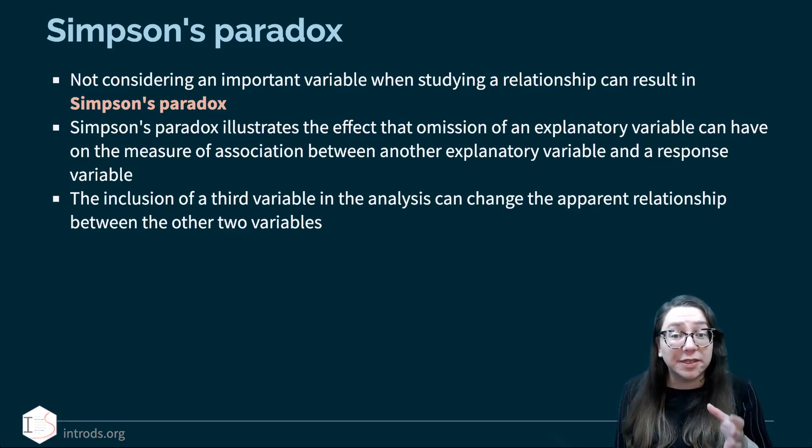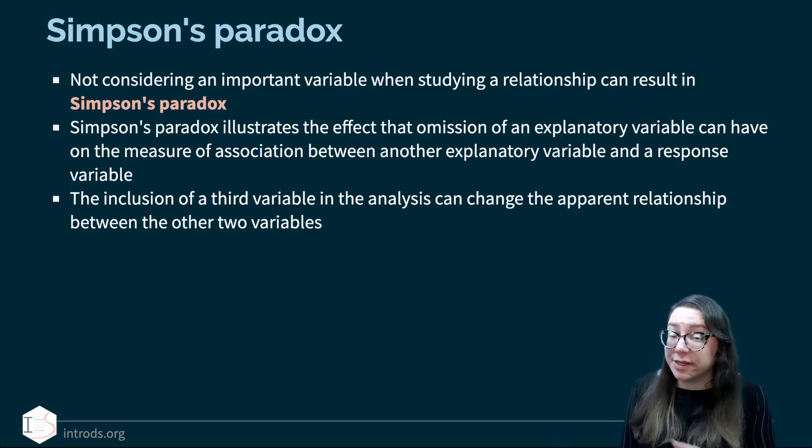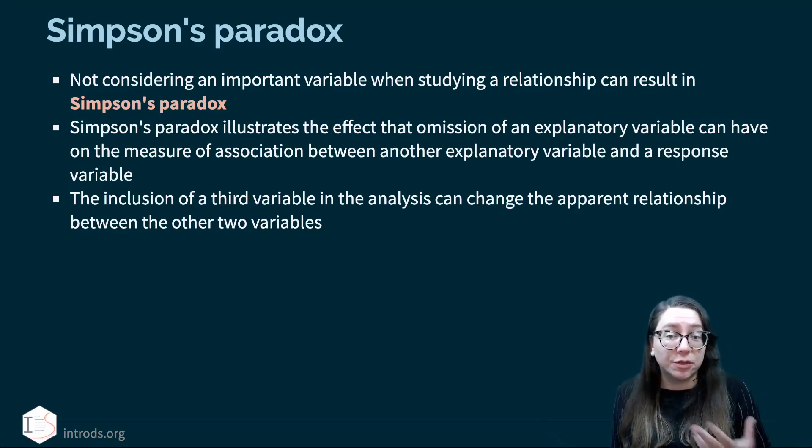Simpson's Paradox illustrates the effect that omission of an explanatory variable, so in the second example it was Z, in the earlier example it was department, can have on the measure of association between another explanatory variable and a response variable. And the inclusion of a third variable in the analysis can actually change the apparent relationship between the other two variables.